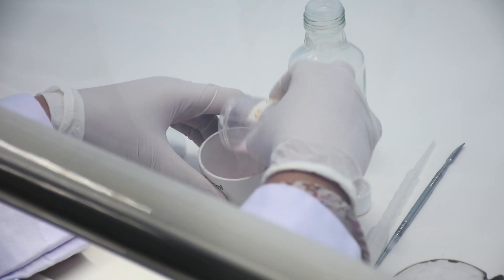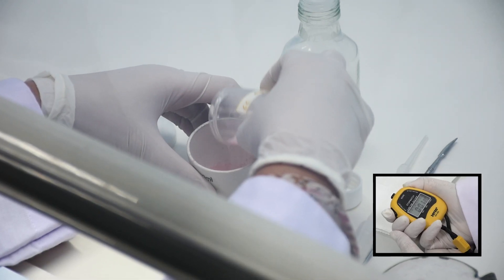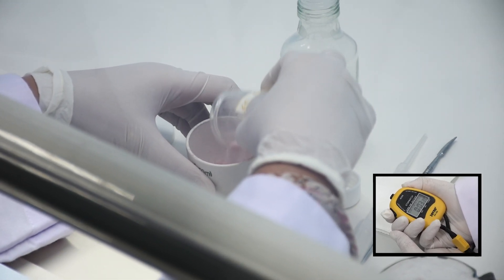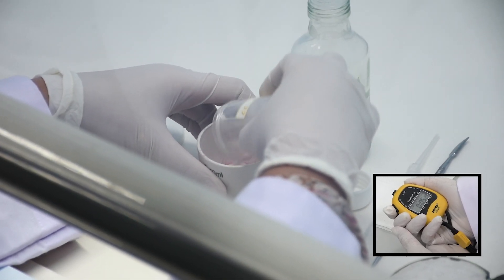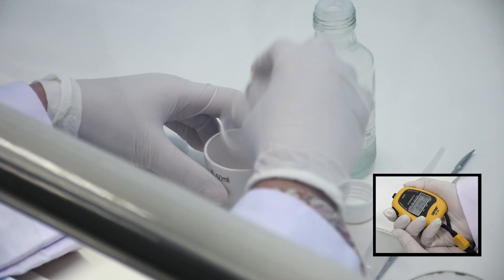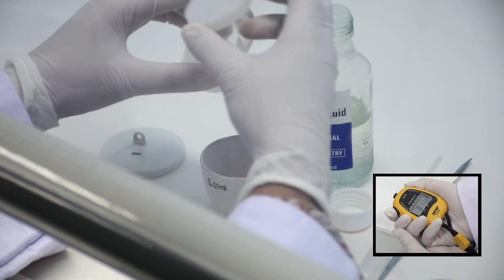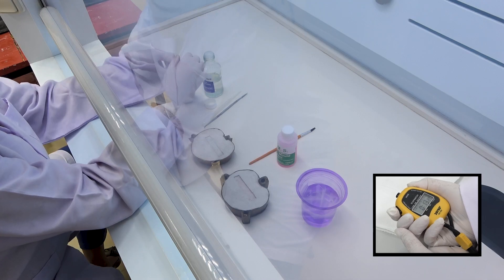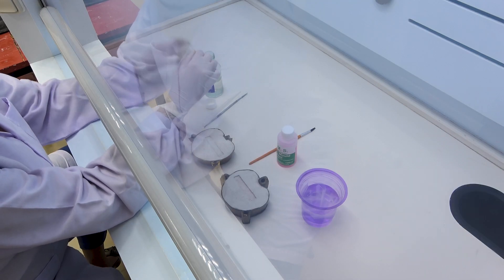Add 5 grams of polymer powder gradually into the dappen dish until all polymer is wetted by the monomer. Start the stopwatch when powder begins to be added to measure setting time.